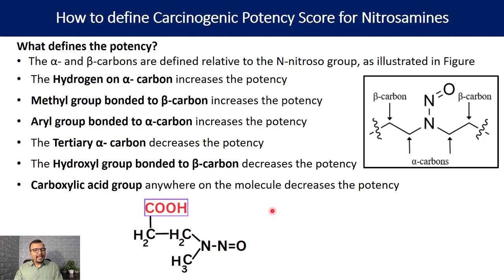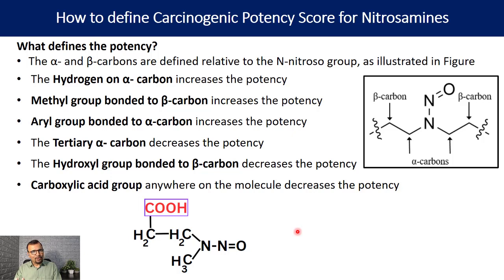Similarly, a carboxylic acid group anywhere on the molecule decreases the carcinogenic potency. In the given example, the carboxylic acid functional group is on the beta carbon, but it is not required to be there — irrespective of its position, if there is a carboxylic acid group in the nitrosamine compound, it will have lower carcinogenic potency, which means a higher acceptable intake limit.